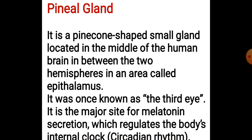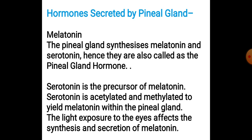This body clock is what we call the circadian rhythm. It was once called the third eye because it controls the body's internal clock. Our body has its own clock — we know when it is night or day, we sleep at night and wake up in the morning. All this is the internal clock which is present in our body, and it is regulated by the pineal gland, which secretes a hormone known as melatonin.